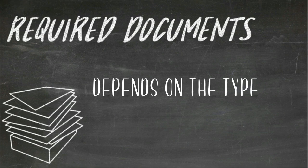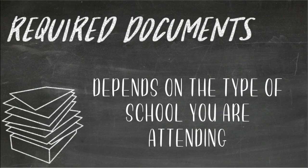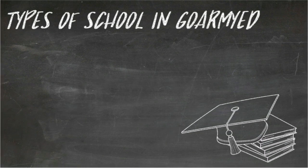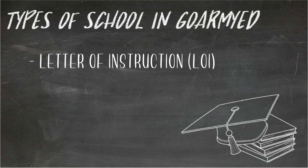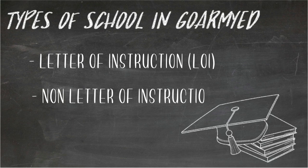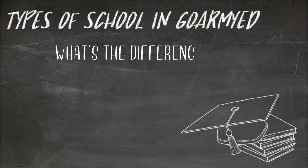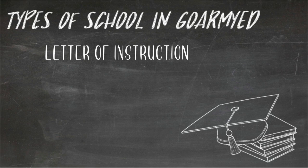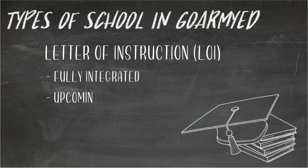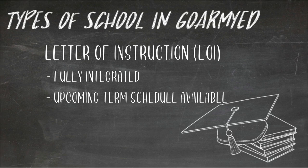What information do I need to submit for a TA Request? There are two types of schools in GoArmyEd. The first is Letter of Instruction Schools (LOI schools). LOI schools are fully integrated into GoArmyEd — upcoming term schedules and registration is completed through GoArmyEd.com. Soldiers register through GoArmyEd.com and verification of enrollment will be sent by the school within 24 hours.